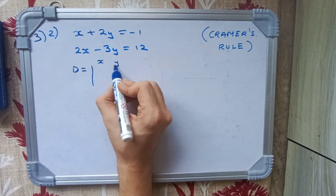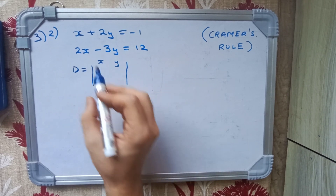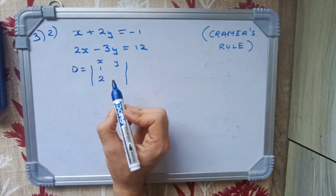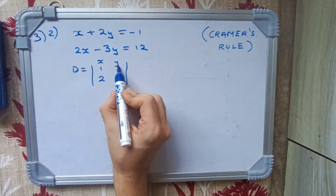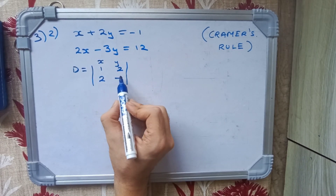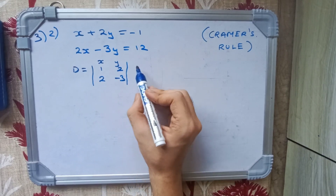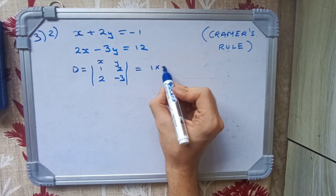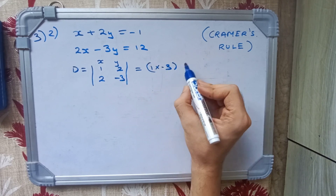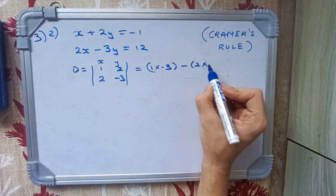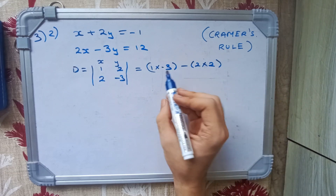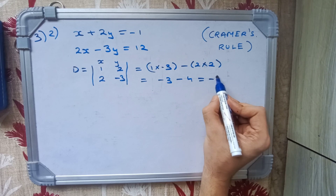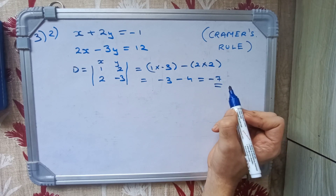To find D, we write the x-coefficients 1 and 2 and y-coefficients 2 and -3. Cross multiplying: 1 × (-3) minus 2 × 2. Since there's a minus sign, we use brackets. We get -3 minus 4, and minus minus is plus, giving D = -7.